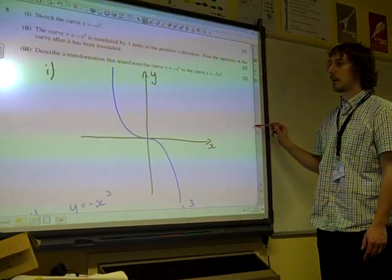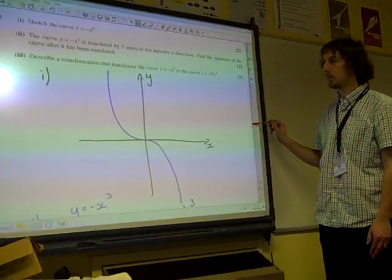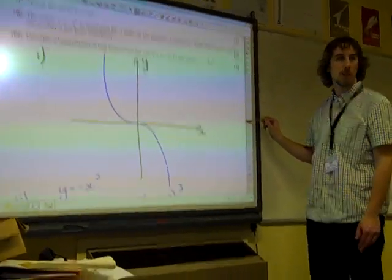Describe a transformation that takes the curve y equals minus x cubed to y equals minus 5x cubed.